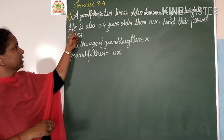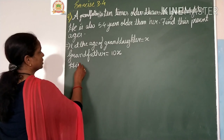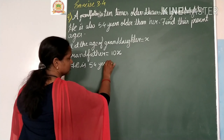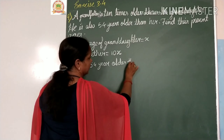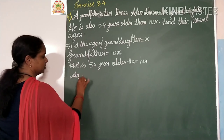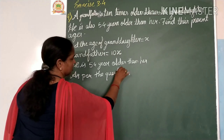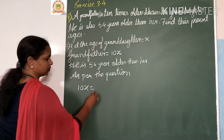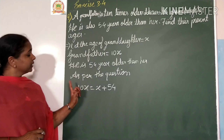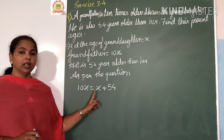He is also 54 years older than her, meaning grandfather's age equals granddaughter's age plus 54. So 10x equals x plus 54, where 10x is the grandfather's age and x plus 54 represents the granddaughter's age plus 54 years.